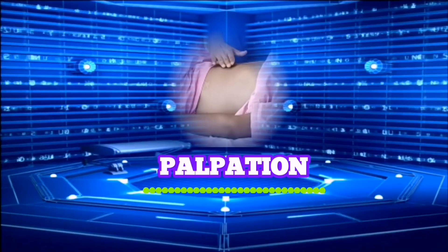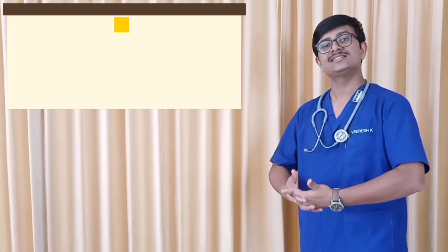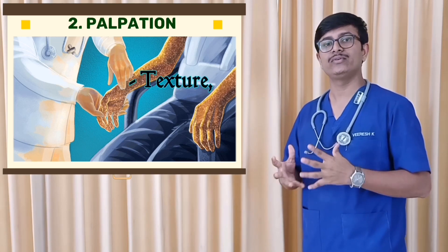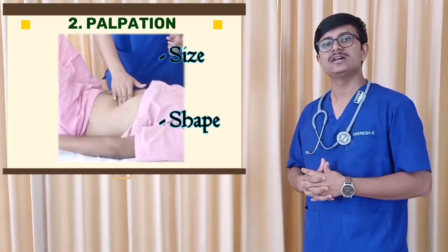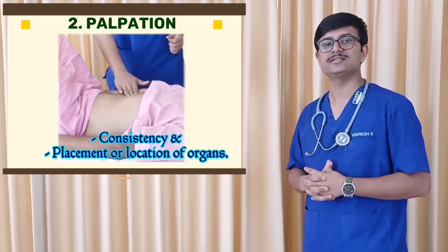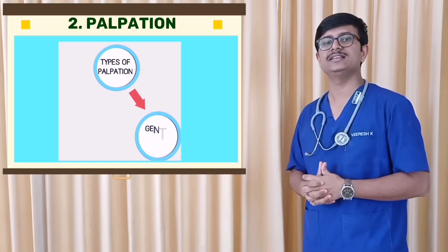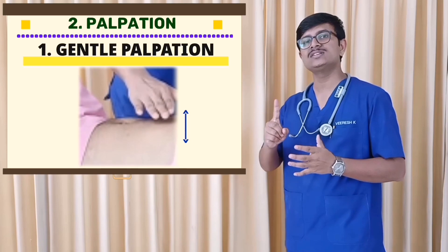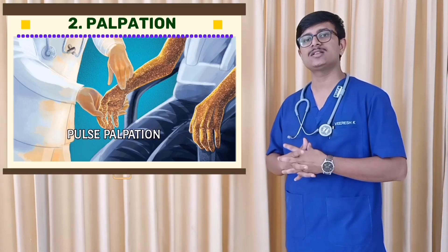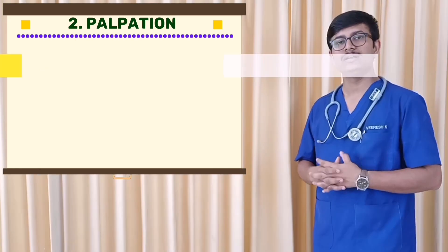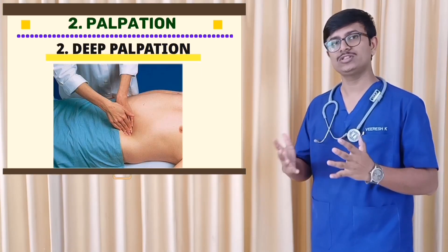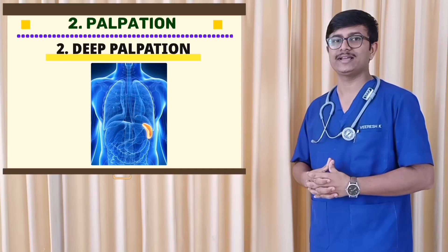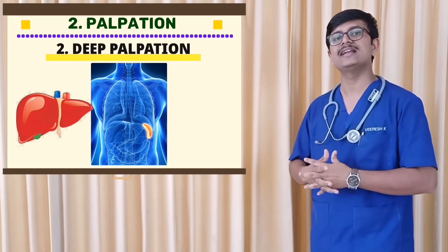Palpation is the second technique of physical examination, performed by the sense of touch. It is the use of tactile sensation to feel texture, size, shape, consistency, and placement or location of organs. Palpation is done by two methods: gentle palpation and deep palpation. Gentle palpation is attained by pressing 1 cm in depth for assessing skin, pulse palpation, and checking for tenderness. Deep palpation involves the use of both hands to press 4 cm in depth to determine organ size, and is done to examine deeper organs such as the liver and spleen.